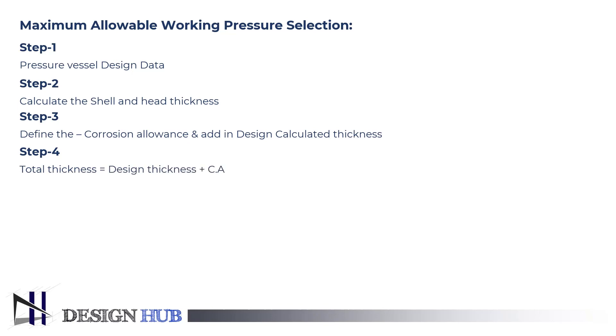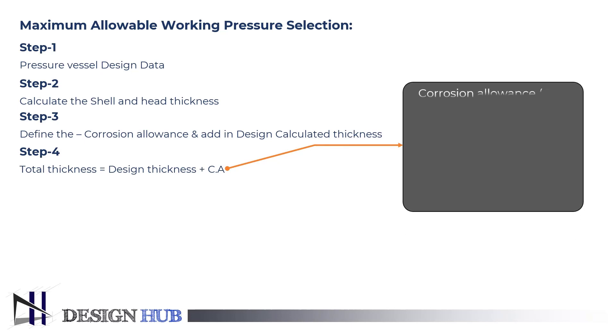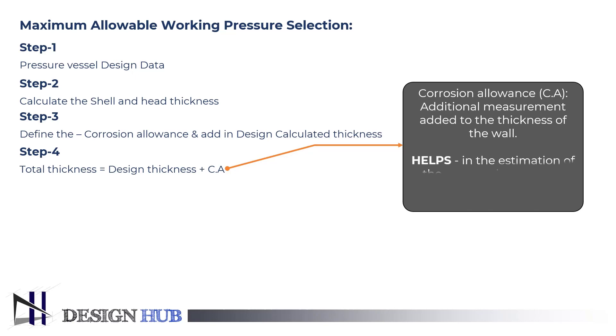One must know what corrosion allowance is. The corrosion allowance describes an additional measure added to the wall thickness. This makes it possible to estimate the expected metal loss over the life of certain equipment.